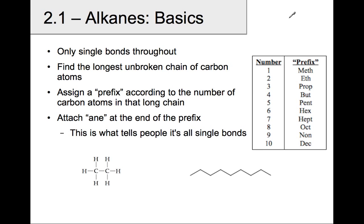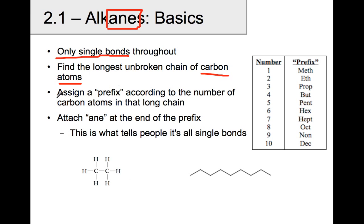Here, in this video, I want to show you how to name alkanes. The ending A-N-E is going to be the common theme throughout the entire video, and all the molecules you see will have only single bonds throughout the molecule. Alkanes, by definition, are an unbroken chain of carbon atoms, and they have to be single bonded in order for it to be an alkane. The way that you're going to name them is to assign a prefix according to the number of carbon atoms that are in the chain.